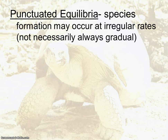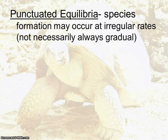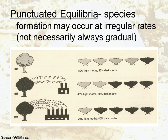Punctuated equilibrium — when looking at punctuated equilibrium, think about the peppered moth example. When punctuated equilibrium occurs, it doesn't necessarily follow the gradualism theory. What's happening is a species evolves very quickly or at an irregular rate — usually quicker than usual — where particular genes take over in a population. The peppered moth is a good example.